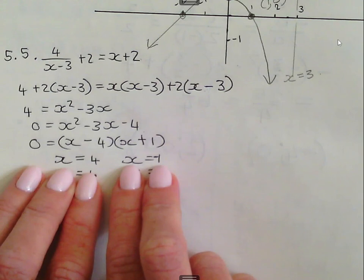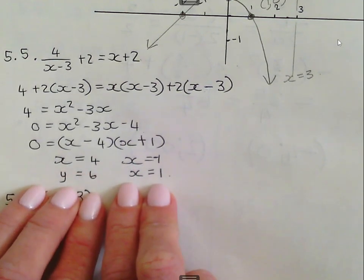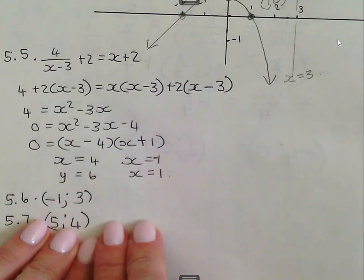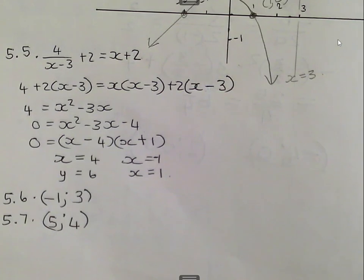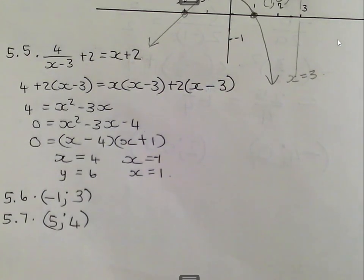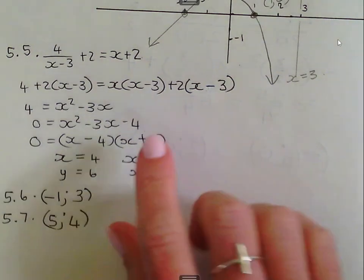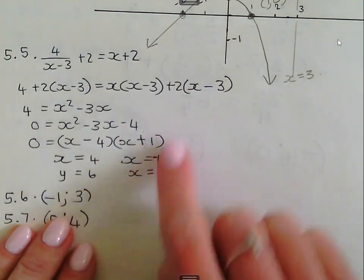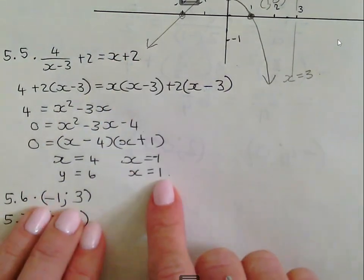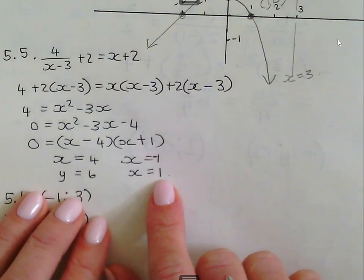Now they did not ask for the y values as well, but I calculated the y values also, just to have everything there. Because it's not something that's hard. You just take your x value, substitute it in one of the two equations. I chose the straight line equation because that's the easiest one. So I just said 4 plus 2 is 6, minus 1 plus 2 is 1. So you'll be able to do that if that was asked.